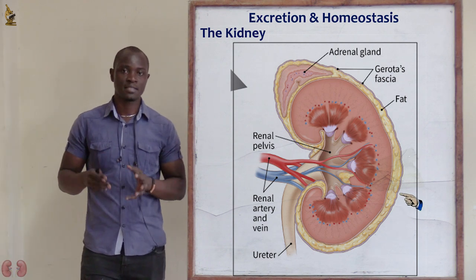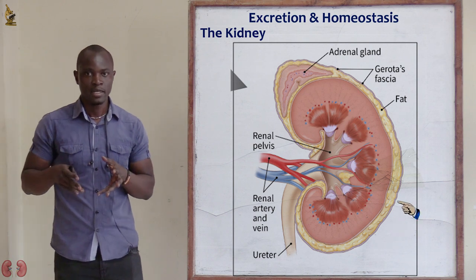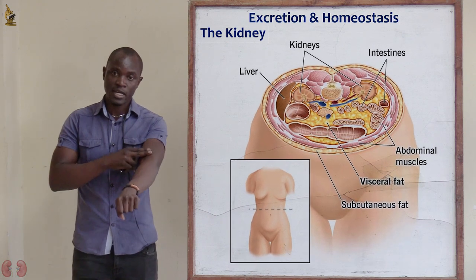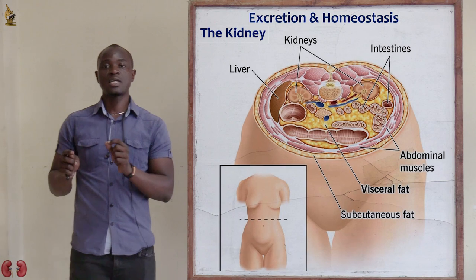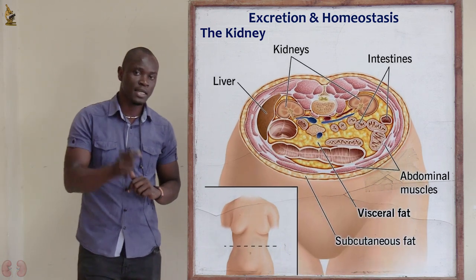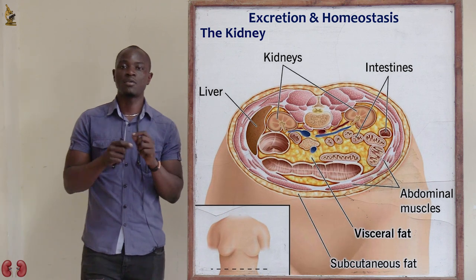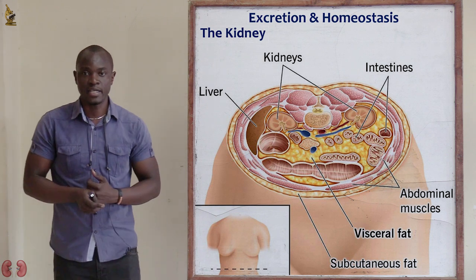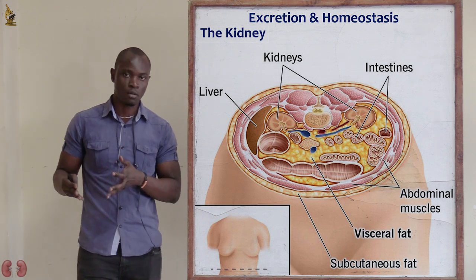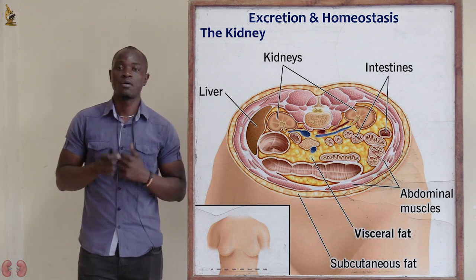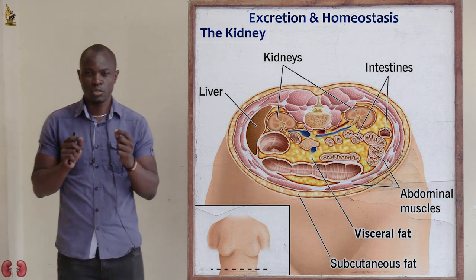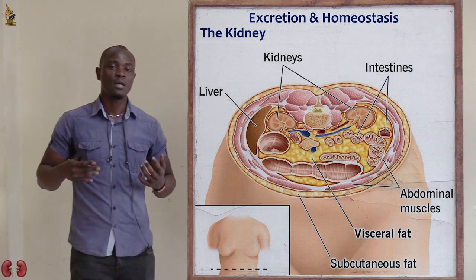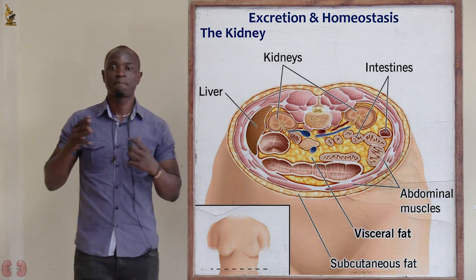We talked about the subcutaneous fat layer, which attaches the organs to the skin — remember the skin is found to the outside and also to the inside of the body. The subcutaneous fat layer is responsible for attaching the kidney to the dermis. This thick fat layer acts as a shock absorber, so when someone has had a blunt trauma on the upper abdominal part, the kidneys won't feel the direct impact because of the cushioning of the subcutaneous fat layer around the kidney.